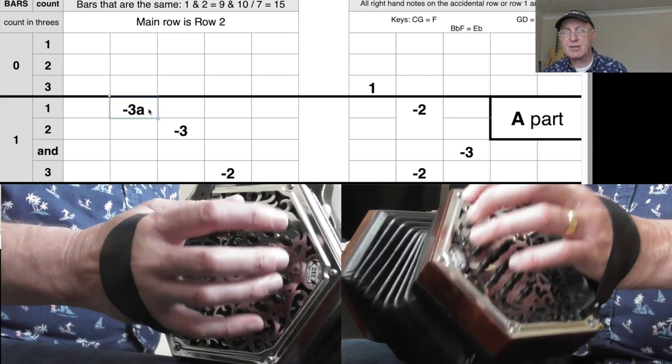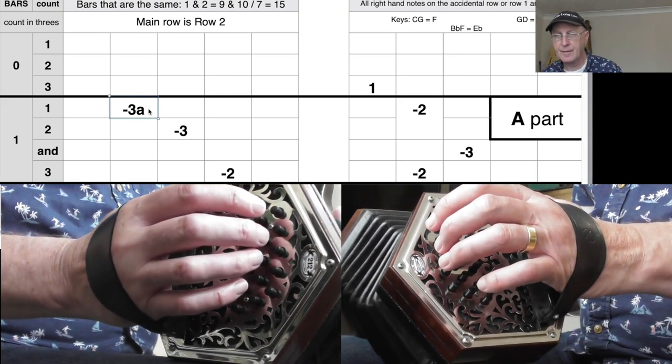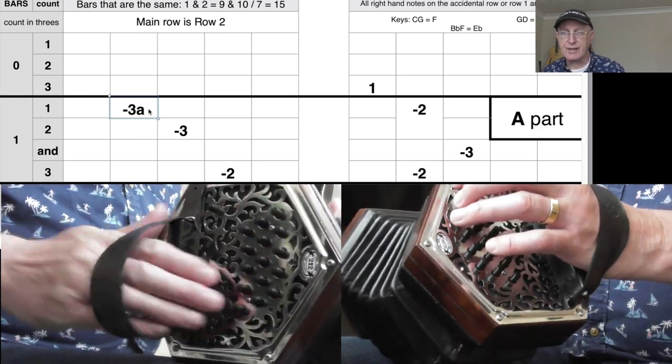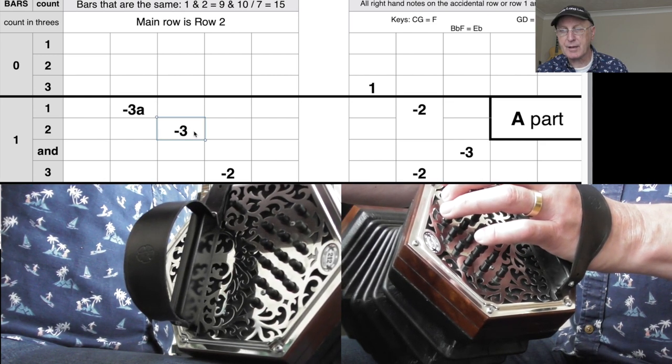So you can see you've got to slot those two hands together, it sounds like this when you put it together. So you can see that you play this note here, button three, finger three on the pull, middle row.